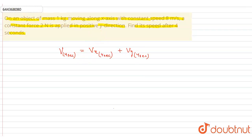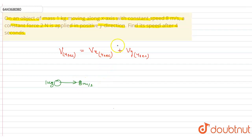As given in the question, a mass of 1 kg is moving along the x-axis with constant speed 8 m per second. As you can see in the question, there is no acceleration in the x direction. That's why velocity is going to be constant in the x direction. So, velocity at 4 seconds in the x direction is 8 m per second.